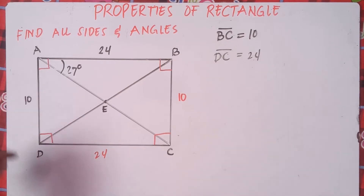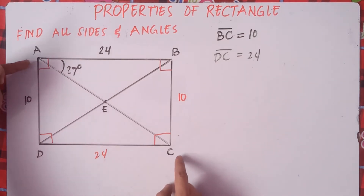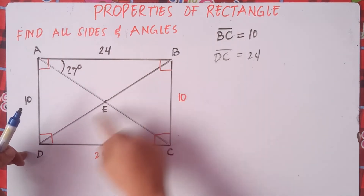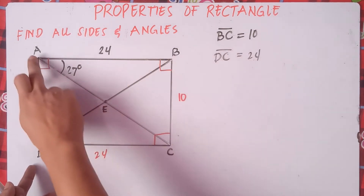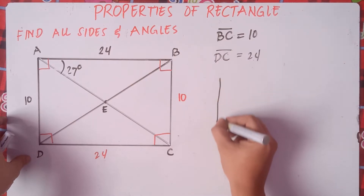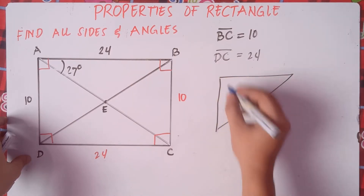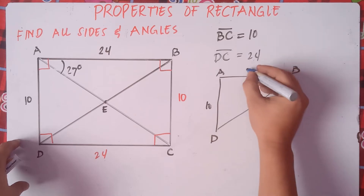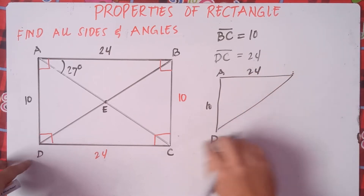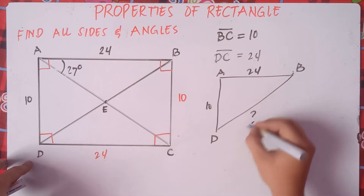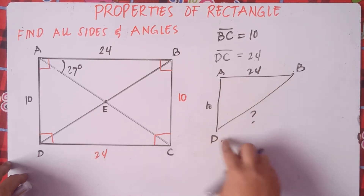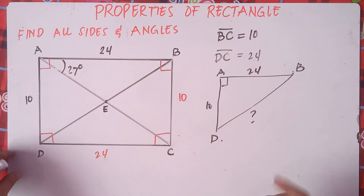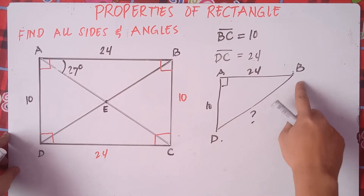We are also told to find the diagonal DB. Do not forget that diagonals of rectangles are the same. Let me draw triangle ABD — we cut the rectangle in half. AD is 10, AB is 24, and we need to find diagonal DB. Since there is one angle measuring 90 degrees, this is a right triangle, so we can use the Pythagorean theorem to find DB.